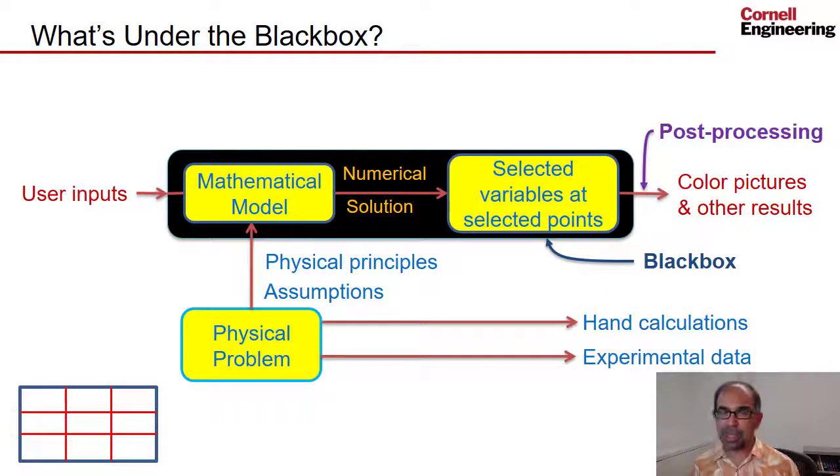Before I talk about that, let me briefly go back to my framework of what's under the black box. The physical problem is the truss subjected to forces and displacement constraints. The mathematical model is based on minimization of the total potential energy of the truss and finding the corresponding pin displacements. The assumptions built in are small displacements, and we also ignore any bending of the bars.